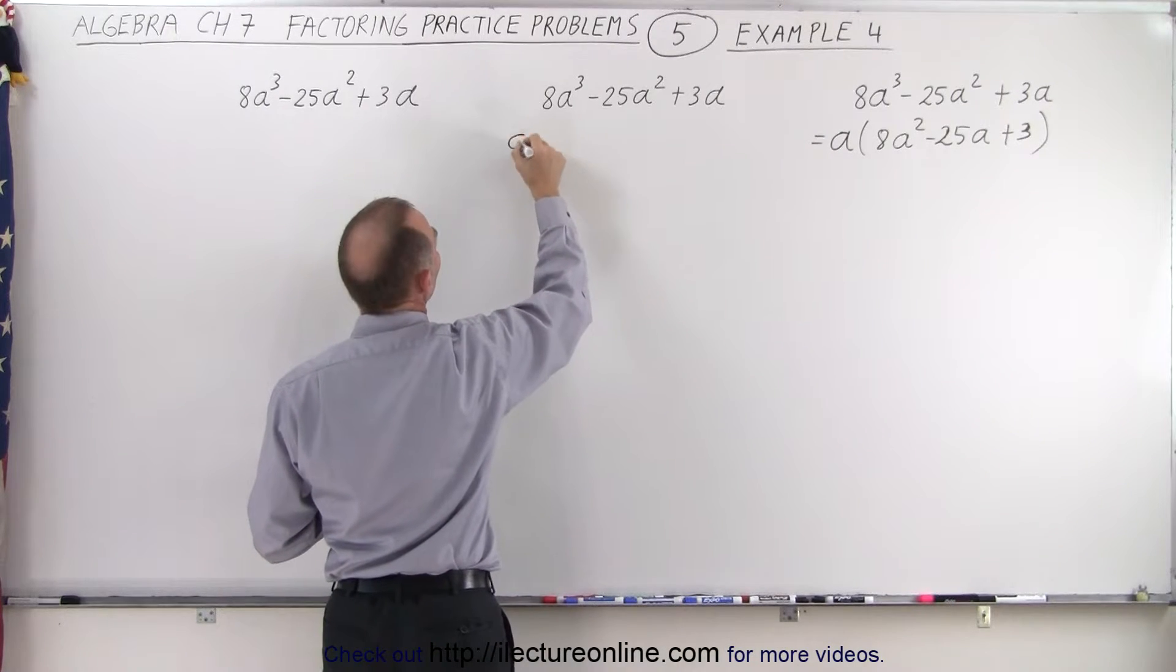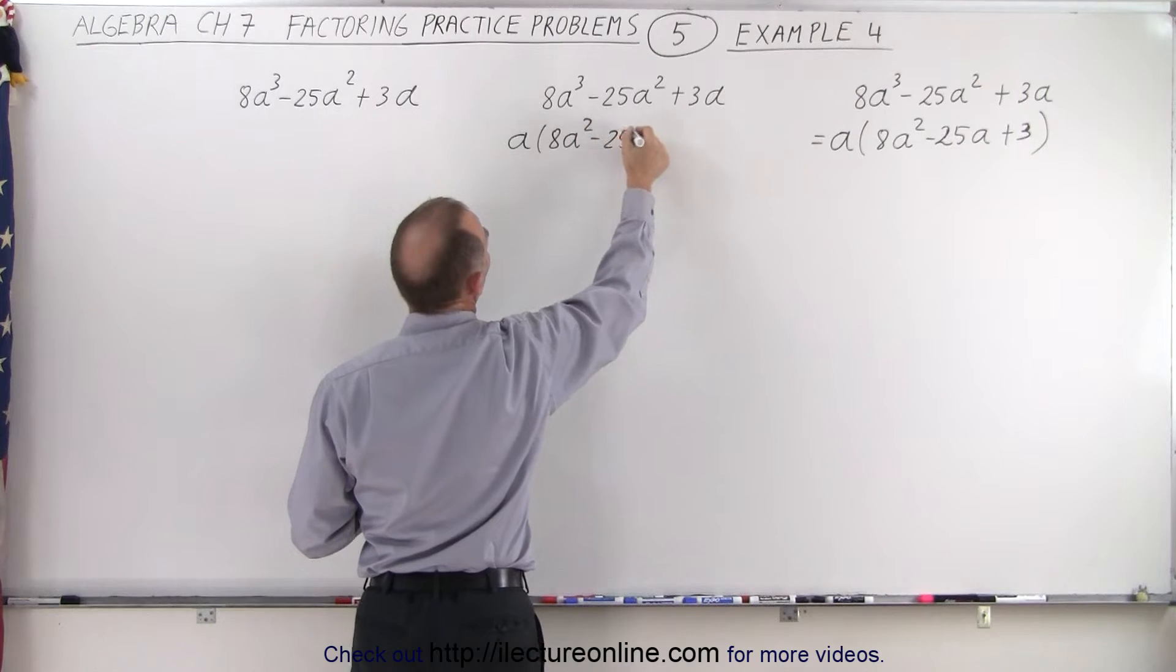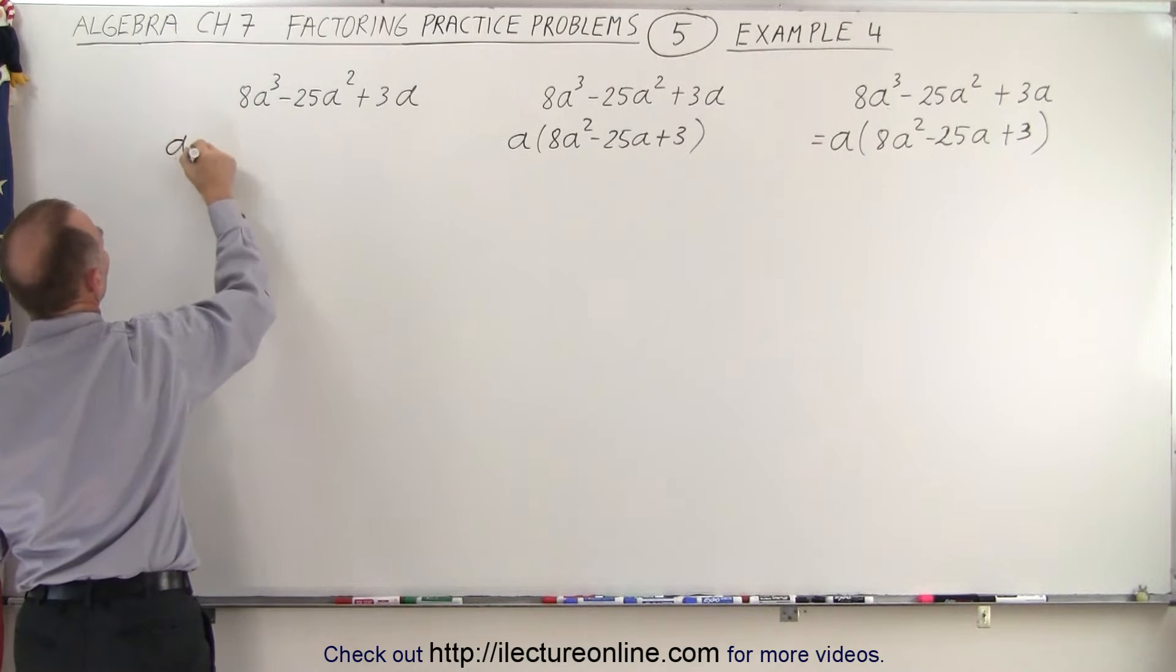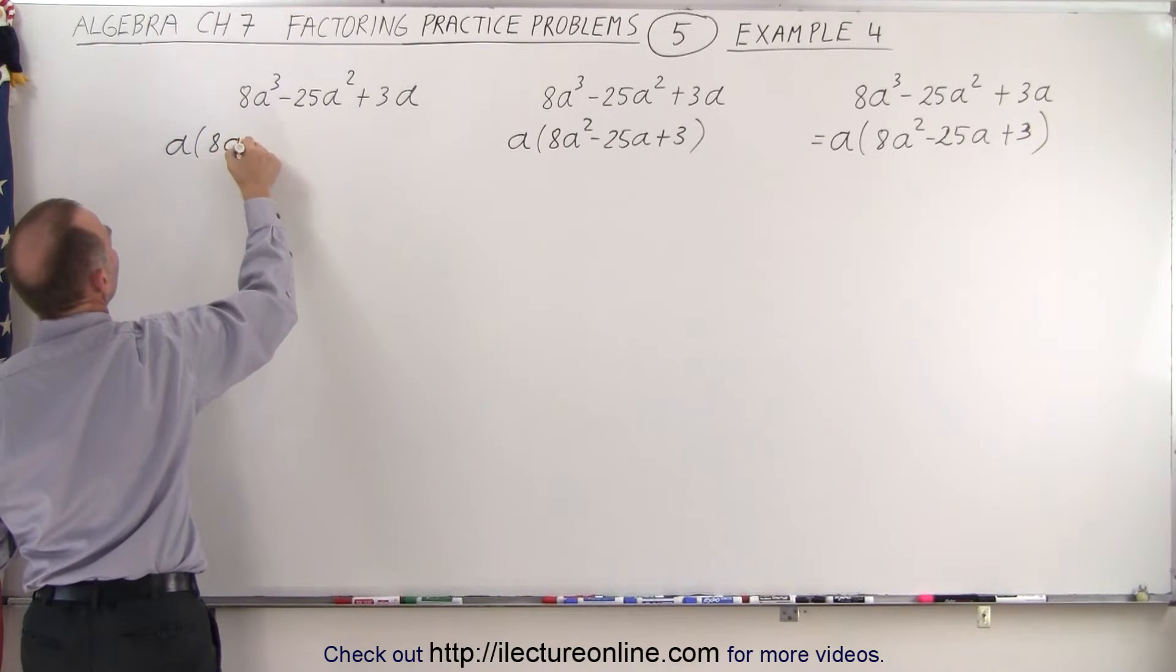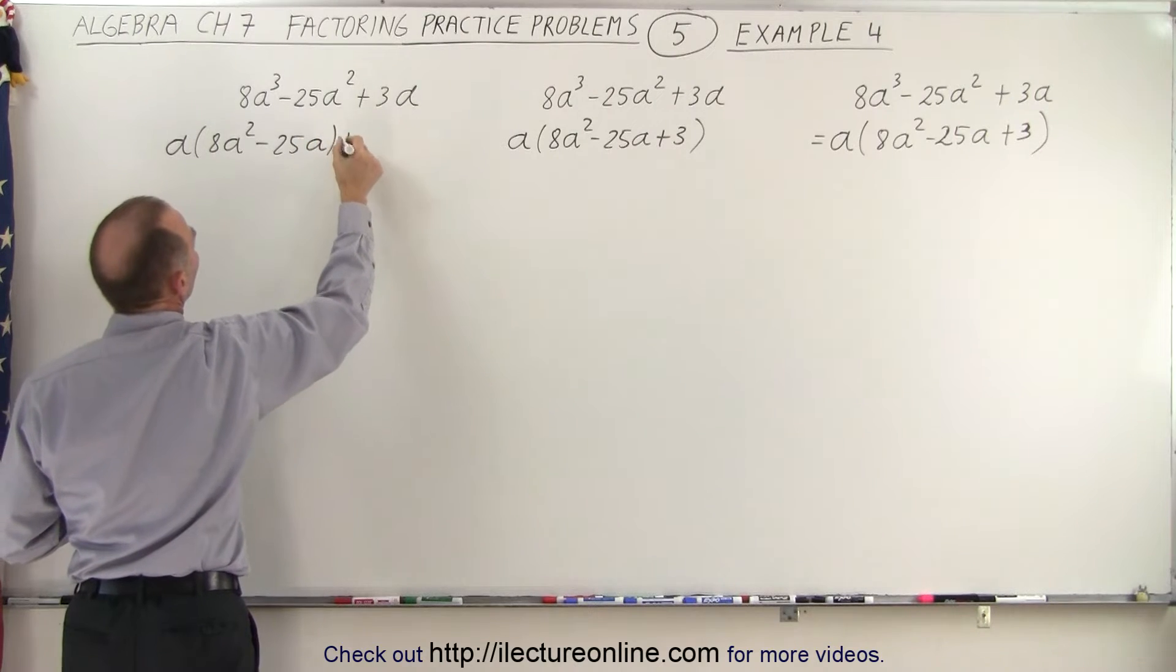Right here, we can write this as a times 8a² - 25a + 3. And here also, we can factor out a, so a times 8a² - 25a + 3.